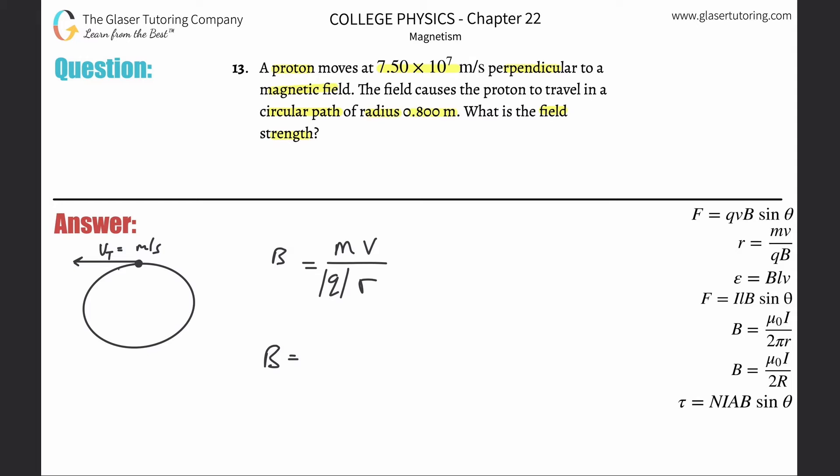Now mass, did they tell you the mass? No, but they told you it is a what? A proton. So you're going to have to memorize this: 1.67 times 10 to the minus 27 kilograms, that is the mass of a proton. The velocity, they gave that to you, 7.5 times 10 to the seventh.